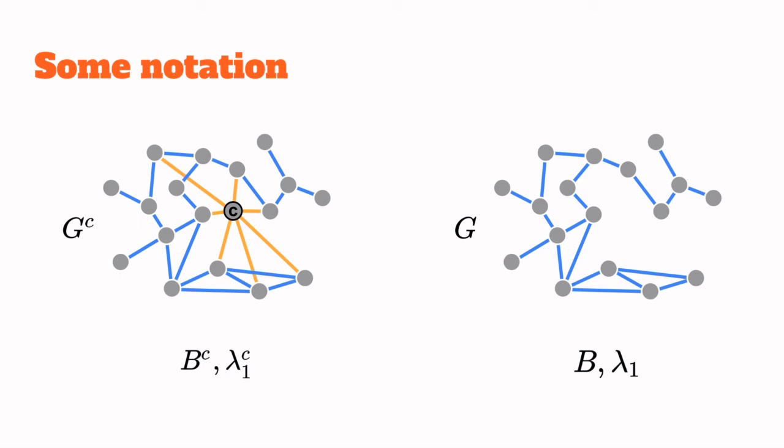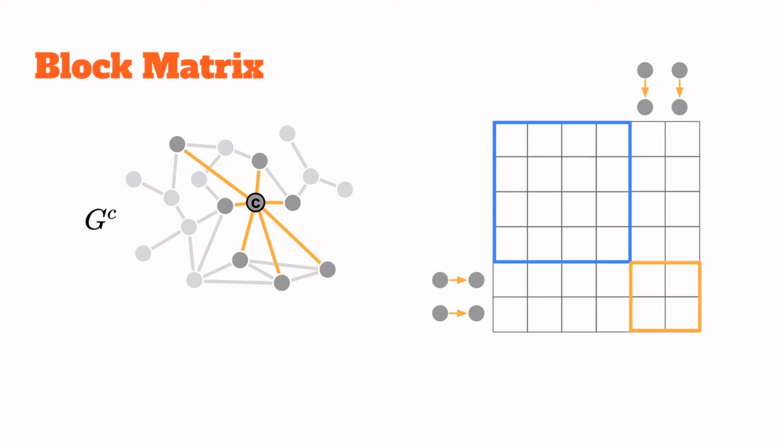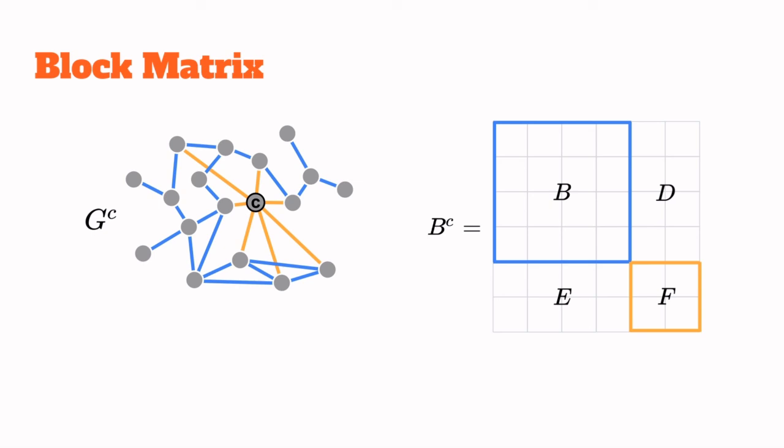Let's start with the graph before the removal, and let's arrange the rows and columns of its non-backtracking matrix so that the blue edges, those that are not incident to the target node, form a block at the top left, and the yellow edges from a block at the bottom right. We're going to label the blocks as B, D, E, and F, and note that the blue block B at the top left is exactly the non-backtracking matrix of the graph after the removal, since by definition it depends only on the edges that are left intact.